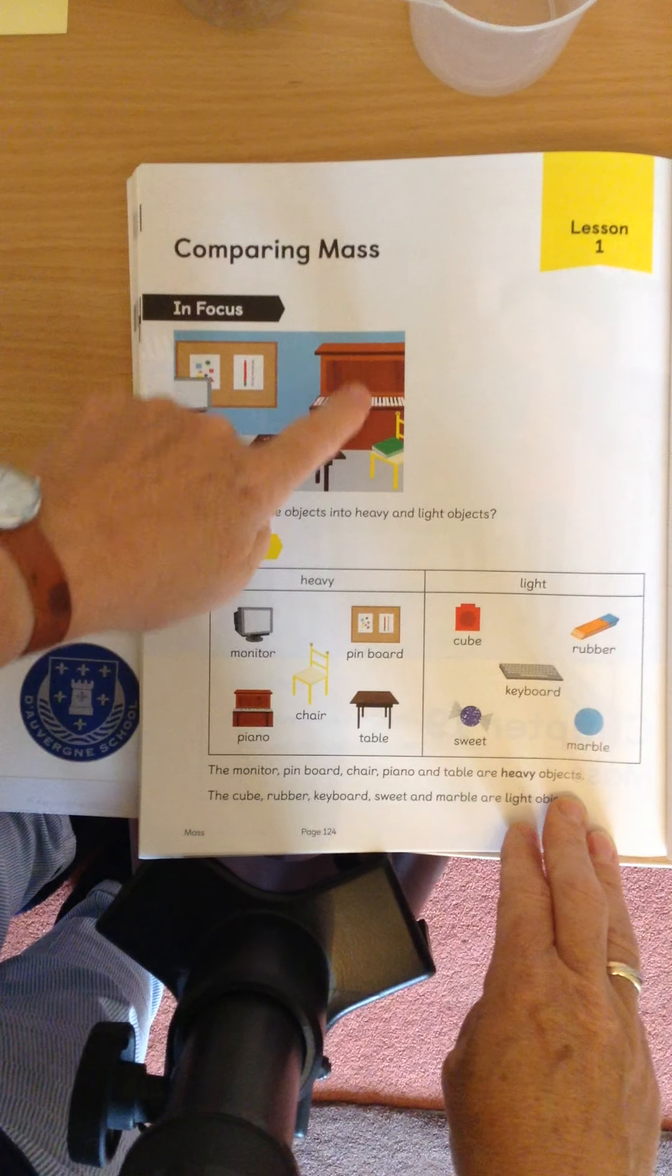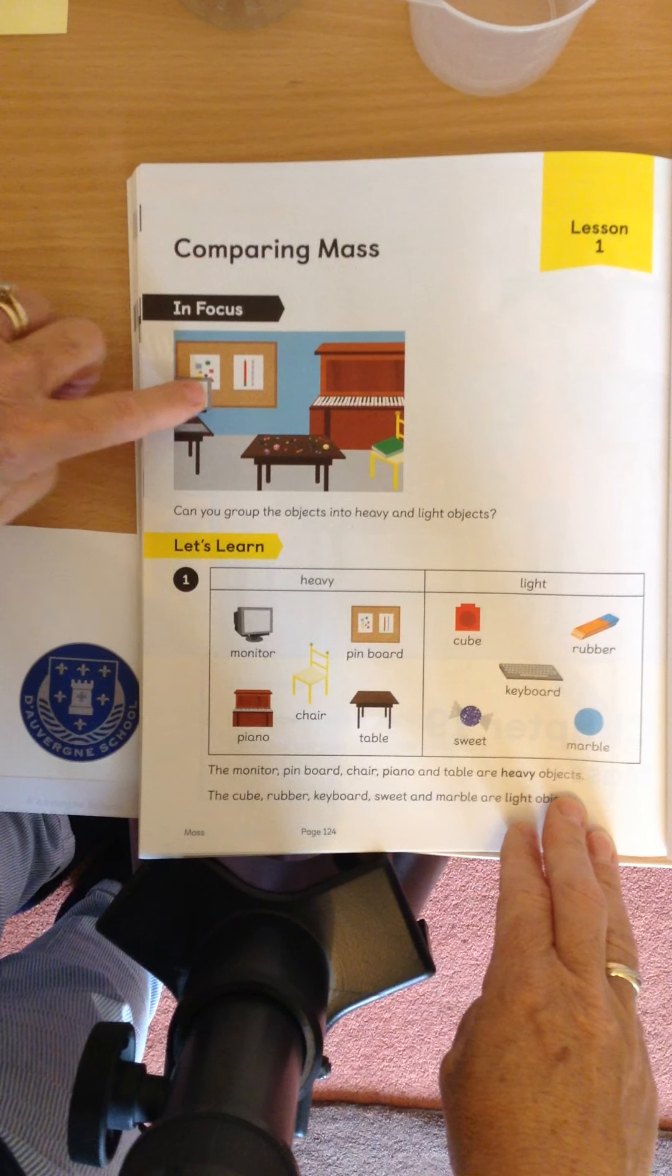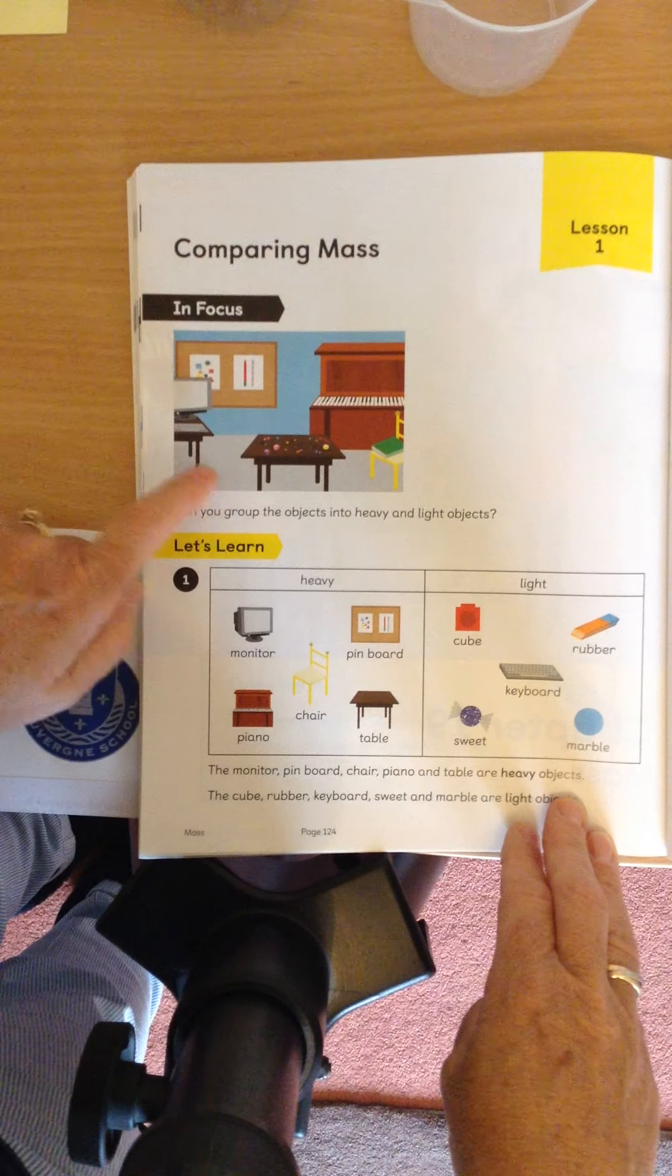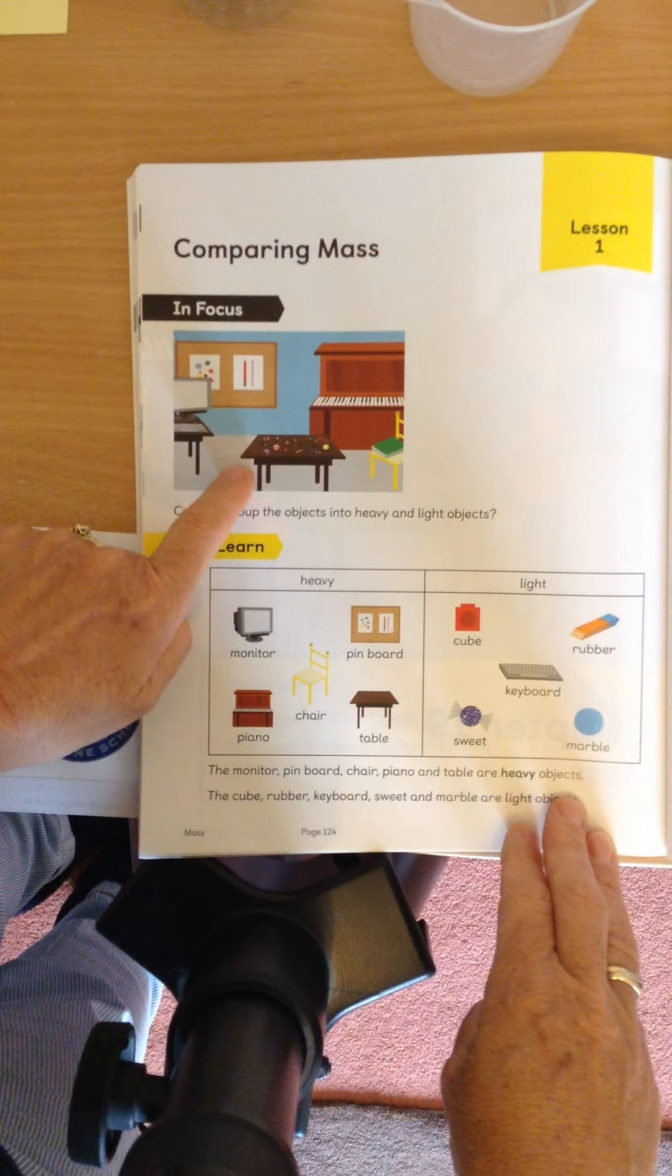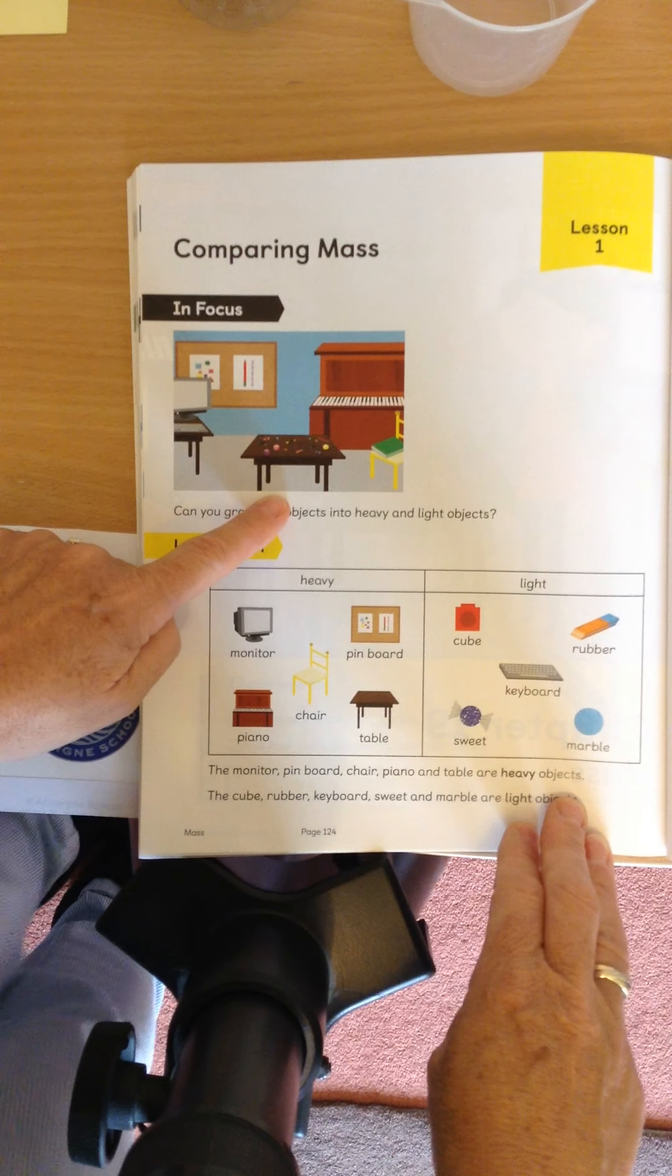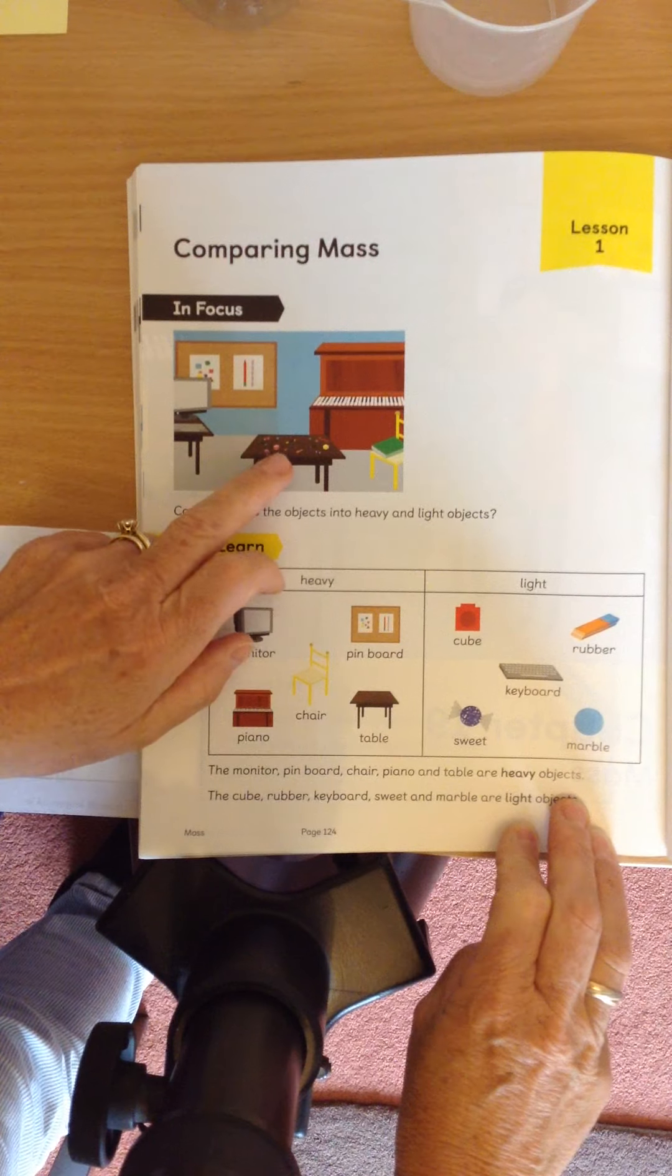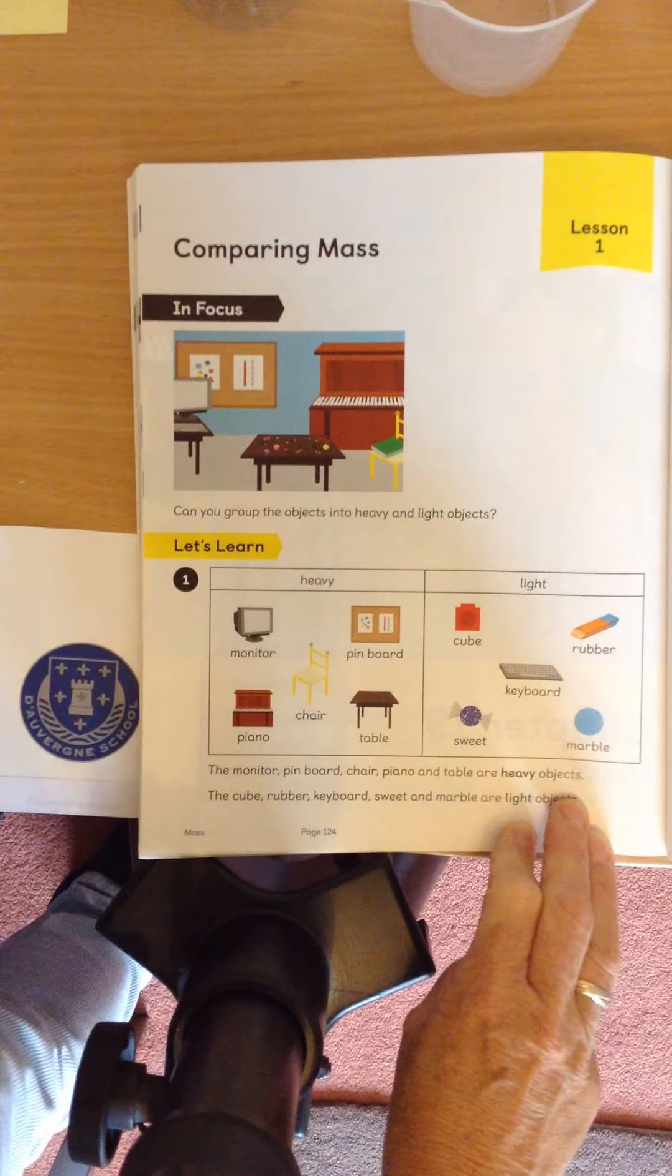So we've got a piano, we've got a pin board, we've got a monitor of a keyboard. We've got a chair, we've got a keyboard, we've got a table. And on the table, if you look very closely, there are little cubes and sweets and crayons and pencils.